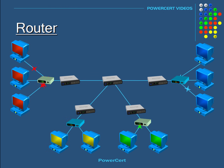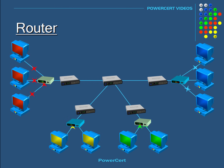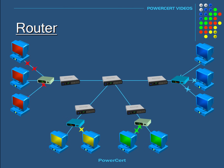Here is an expanded view of routers over the internet. There are four networks, indicated by their different colors, and each network has their own router along with their hubs or switches and their computers. As you can see, each network is just exchanging information within their own network — their data is not going out on the internet, so they are not communicating with other networks. They are just exchanging data within their own network using their hub or switch.